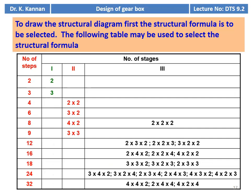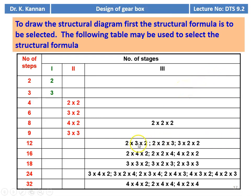The following table can be referred to for the structural formula. For a single stage with 3 different output speeds, use a single stage. For 4 steps, use 2 stages — 2×2. For 6 speeds, use 3×2 or 2×3. For 8 output speeds, use 4×2 (4 gears on first shaft, 2 on second), or use 3 stages as 2×2×2 (2 gears on each shaft). For a 9-speed gearbox, use 2 stages as 3×3 (3 gears on each shaft). For a 12-speed gearbox, different combinations are possible using 3 stages: 2×3×2, 2×2×3, or 3×2×2.